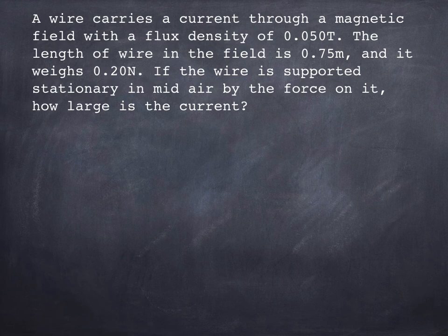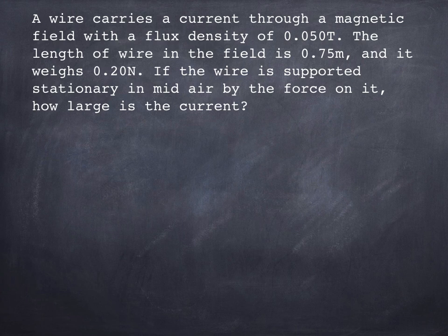The length of the wire in the field is 0.75 meters and it weighs 0.20 newtons. If the wire is supported stationary in midair by the force on it, how large is the current? So what this question is basically saying, if you can visualize it, is that the wire is being held upwards by the magnetic force on it. The magnetic force must therefore be equal to its weight, 0.20 newtons.